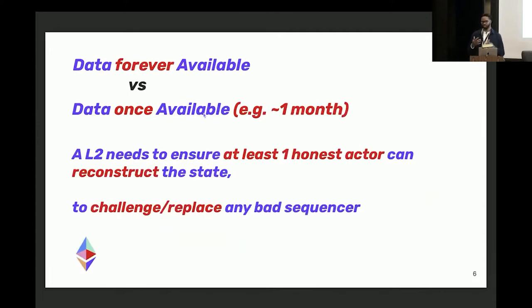For data availability, you could think about it like data forever available or data once available. In the former case, the data you're posting back to L1 needs to be always there or easily reconstructed and trusted forever. For data once available, this is the minimum requirement for most rollups where they have a settlement period, at least for optimistic rollups, whether it's two weeks or whatever. If the data is available for longer than that settlement period, then you can trust the rollup because you can always derive the state from the data.